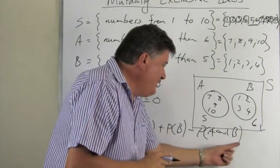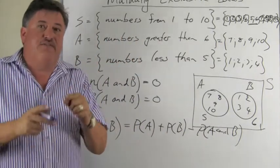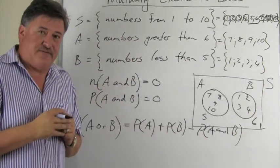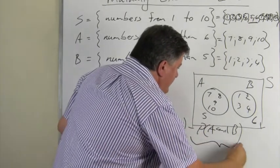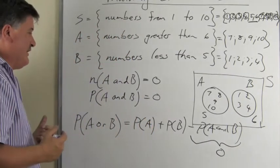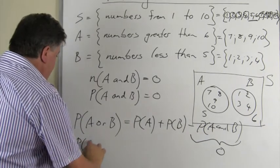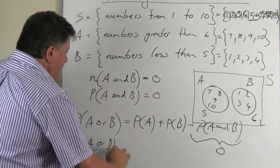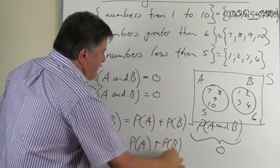Now, what do you now know about the P(A and B)? If the two events are mutually exclusive, this will become 0. So now what do we know? For mutually exclusive events, the P(A or B) is equal to the P(A) plus the P(B).